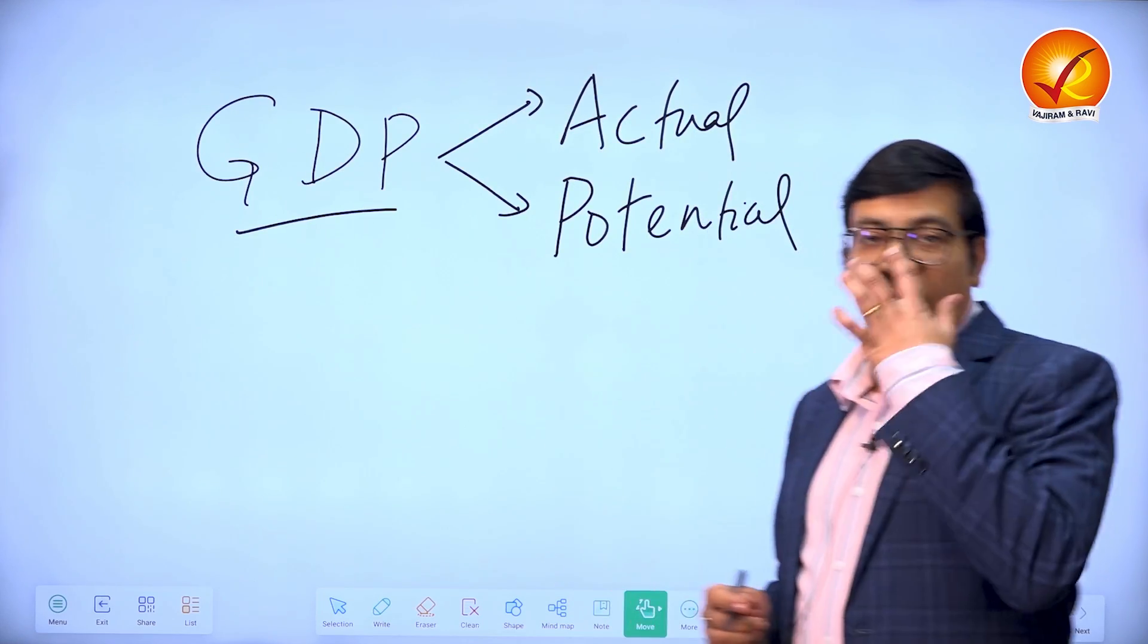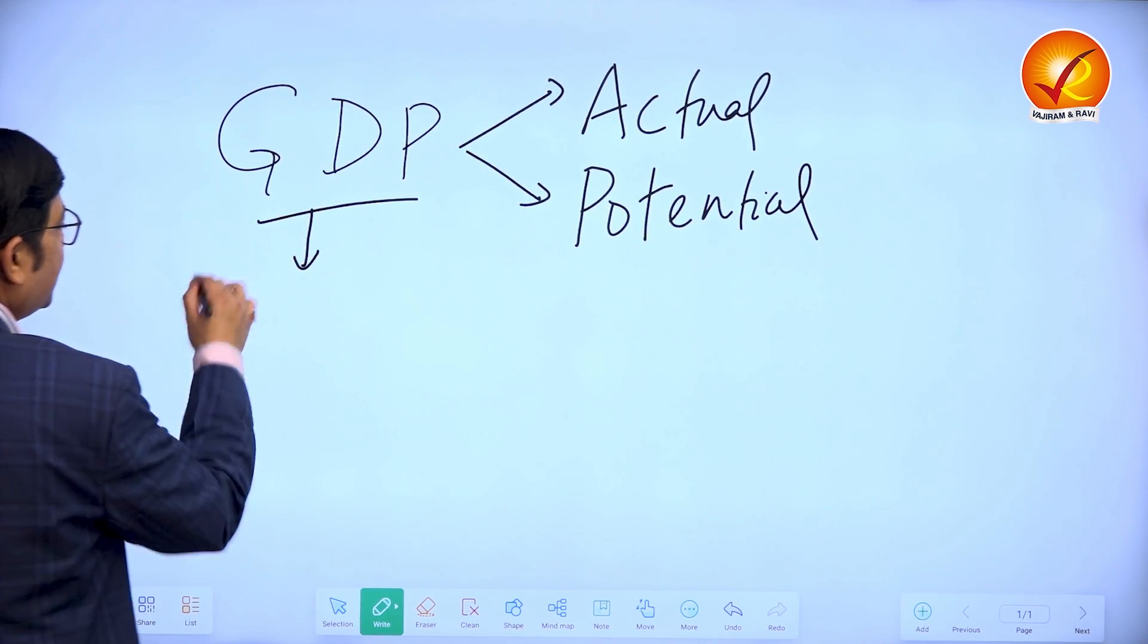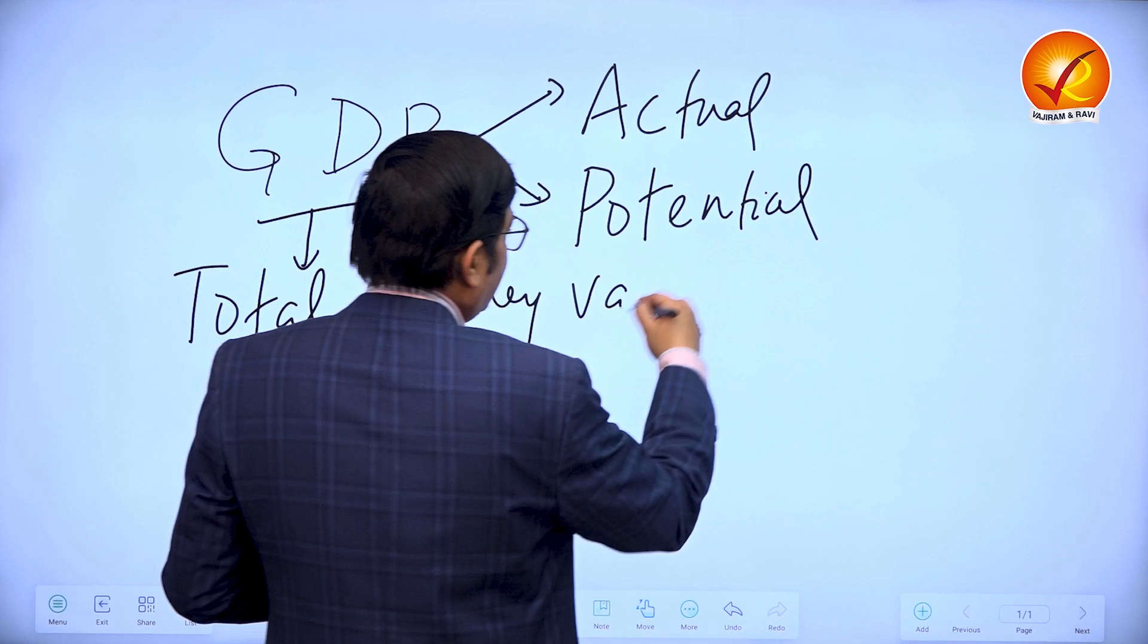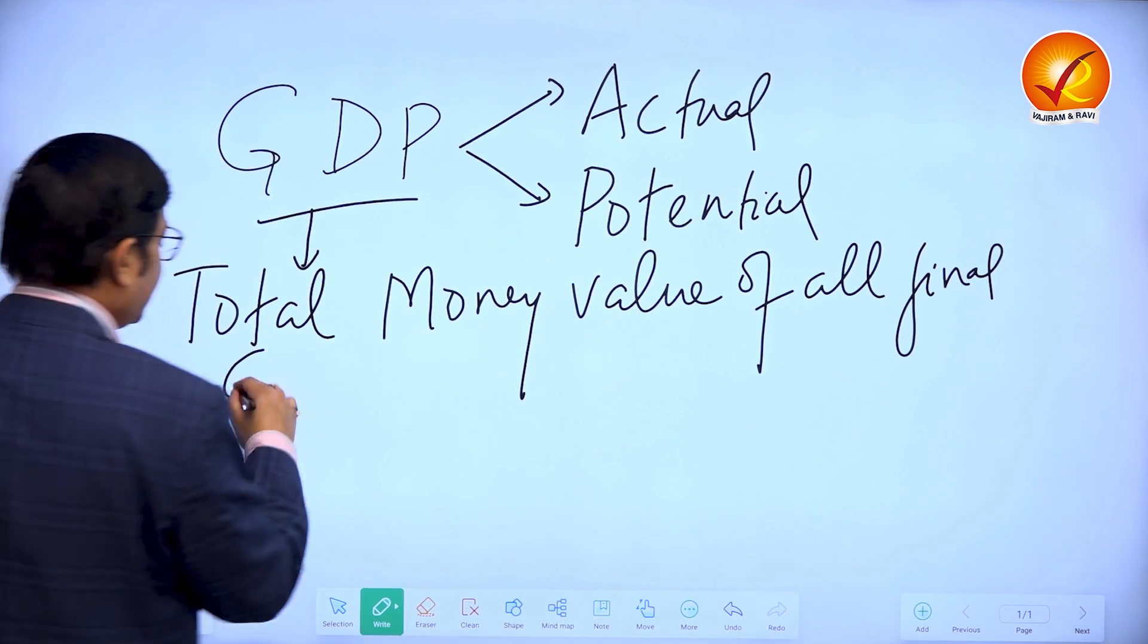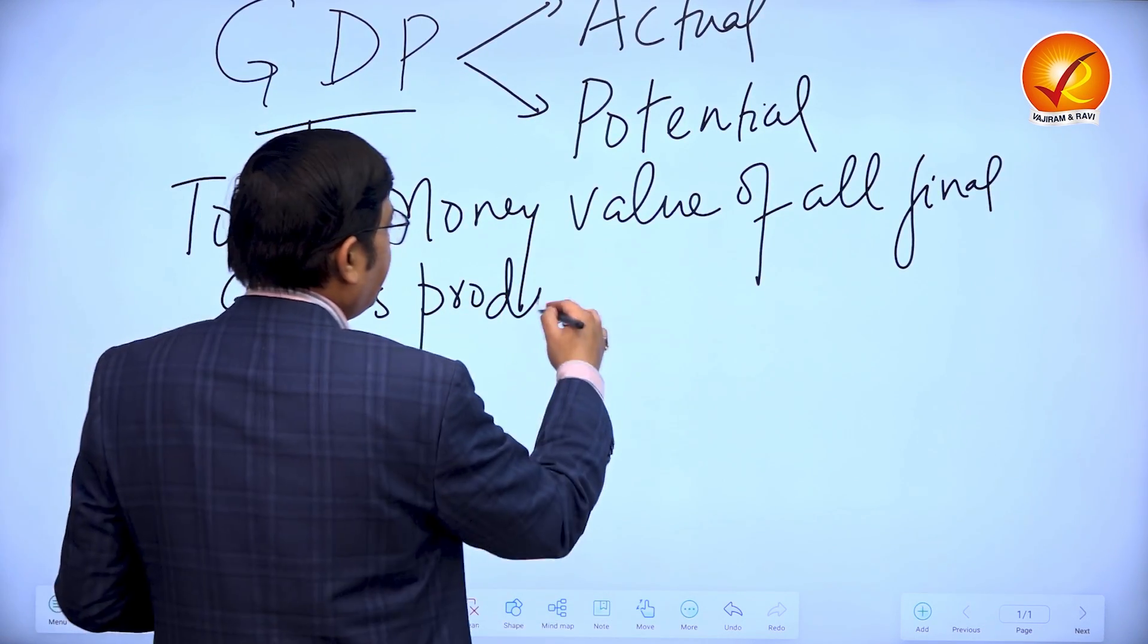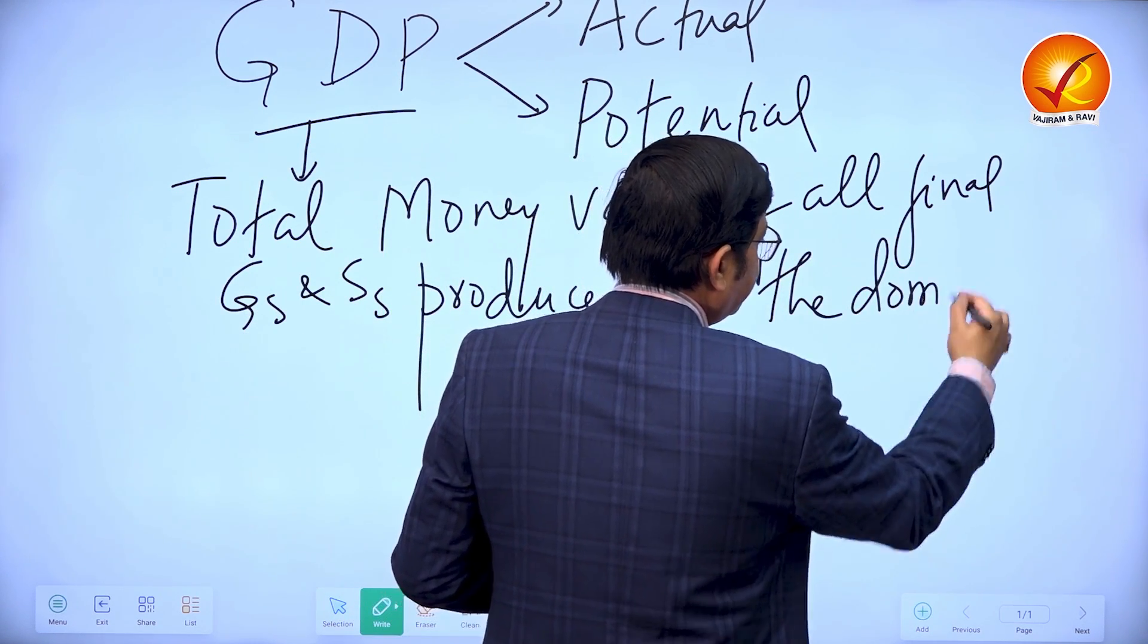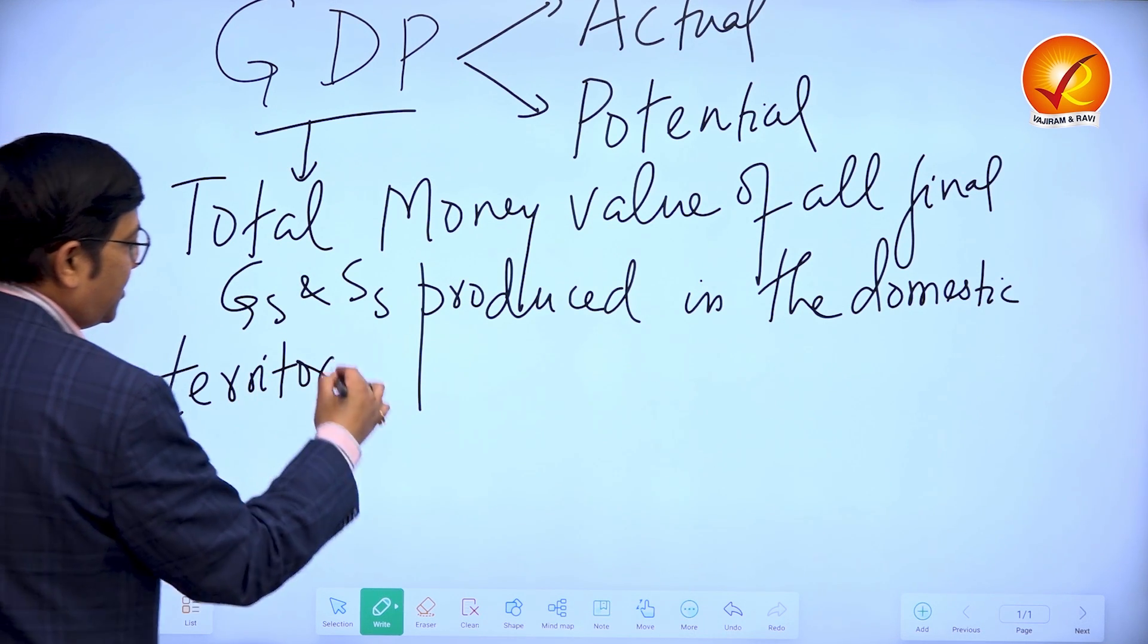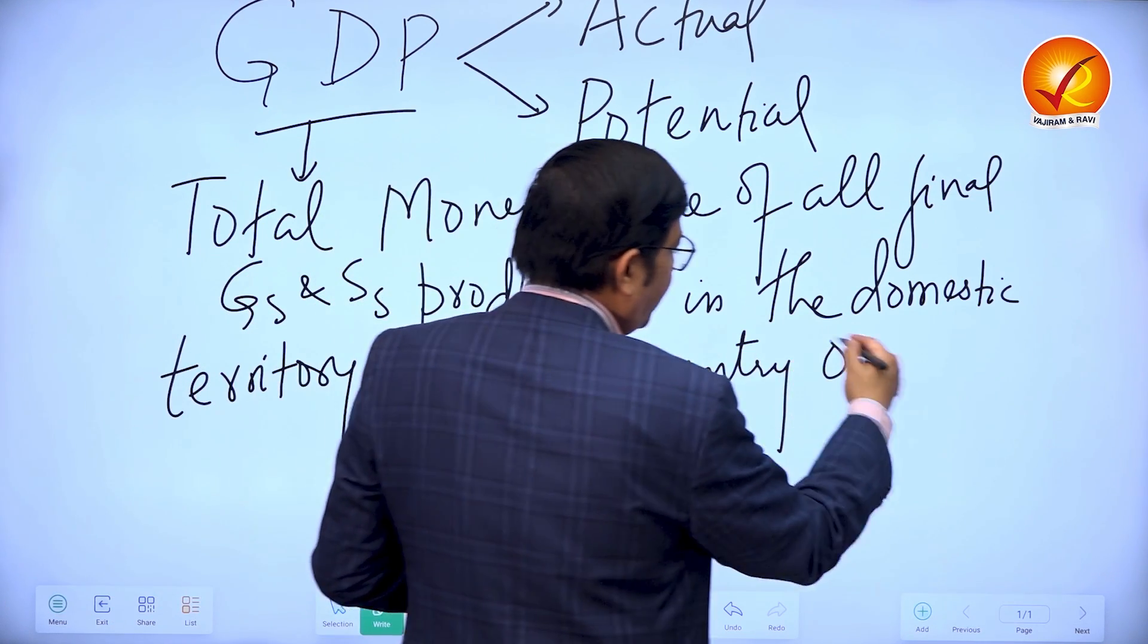GDP or Gross Domestic Product refers to the total money value of all final goods and services produced in the domestic territory of the country over a period.